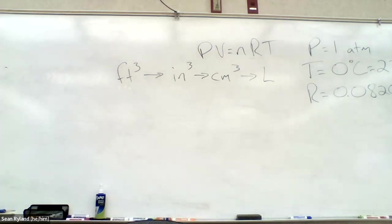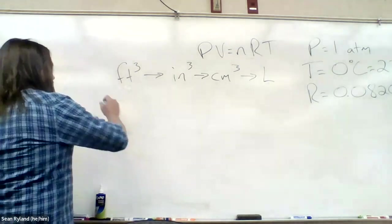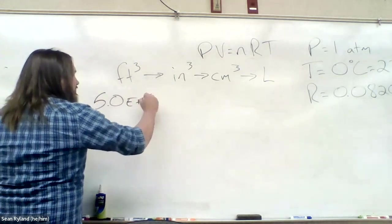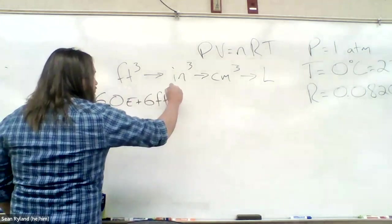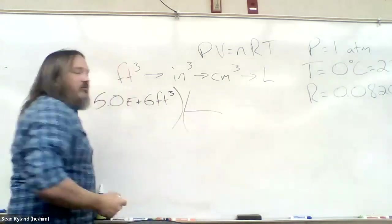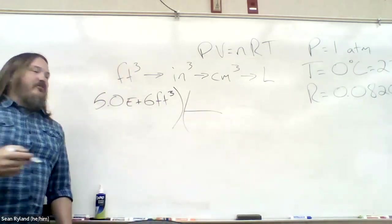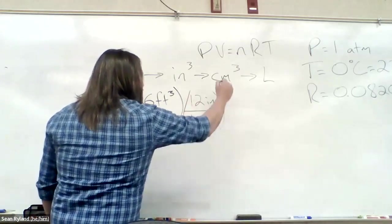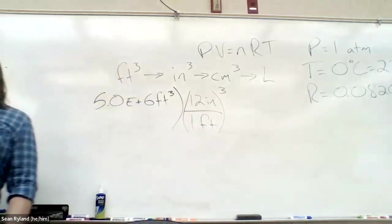That's squared, so another 12 times that. What do we do instead of actually getting a number for it? We cube it. We have 5.0 times 10 to the 6 feet cubed. We don't need to know what 12 cubed is. We just need to know that there's 12 inches in a foot because then we can just do that.